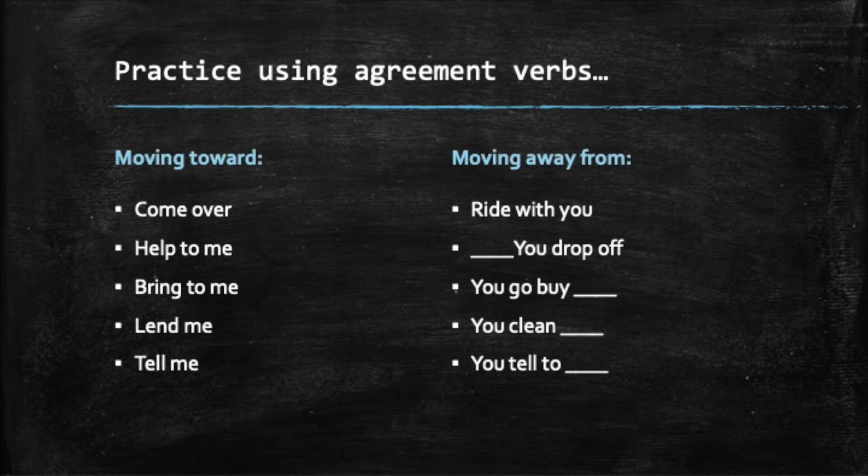I want you to practice using agreement verbs in Unit 8. Here's a tip: if the word or concept contains 'to me' in the phrase, the sign will move toward the signer. Examples: come over, help me, lend me, let me borrow, tell me — these all move toward the signer.